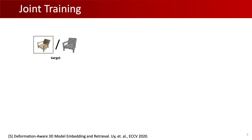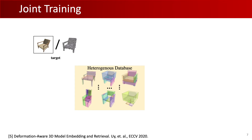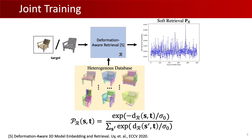The key to our joint training scheme is soft retrieval. The given target and source models in the database are embedded into the latent retrieval space R. The distance of each source to the target in this latent space defines the probability of selecting it in our soft retrieval module. Using this probability distribution, we sample a set of sources SC that are used to train both the retrieval and deformation modules, instead of training on random source-target pairs. This makes our deformation module also retrieval-aware.